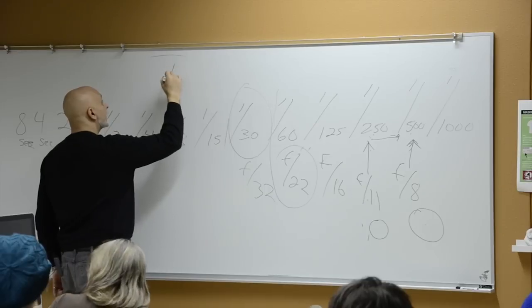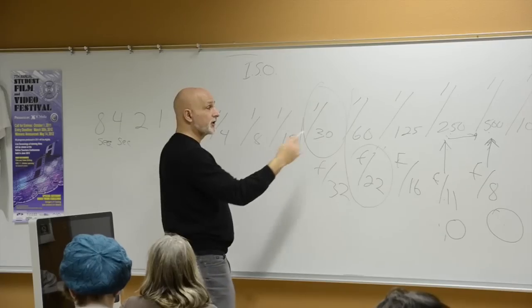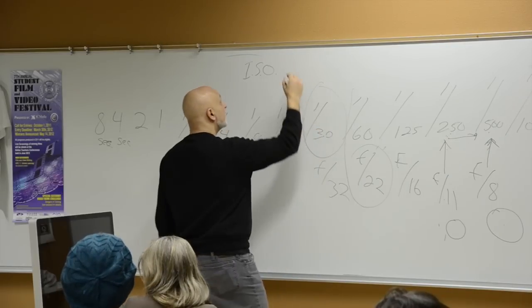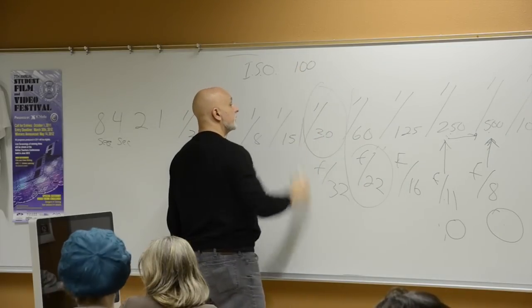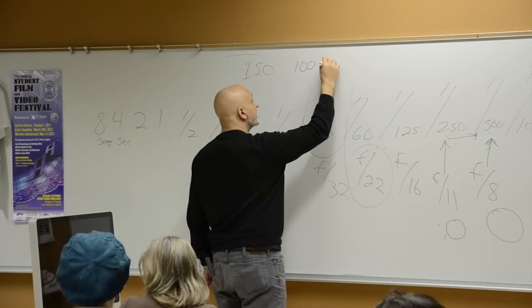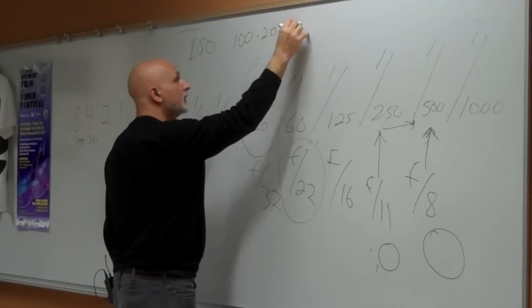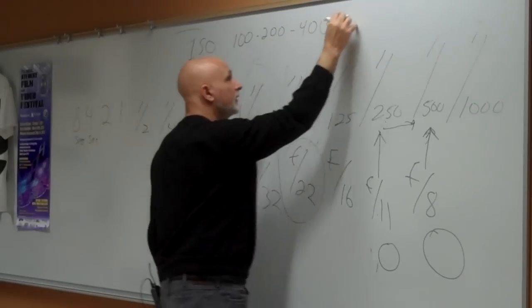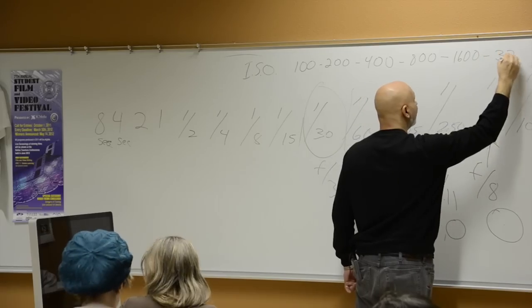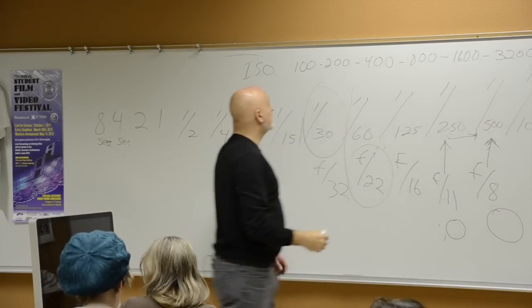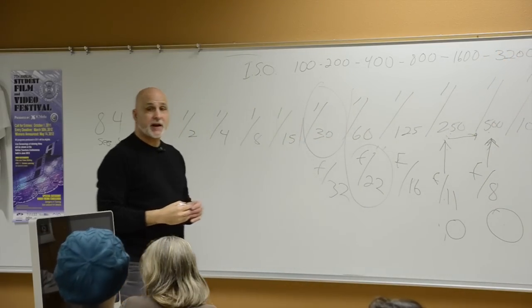So here's your ISOs. ISOs are just as simple as shutter speeds. It's just like shutter speeds. They usually start at 100 and then they just keep doing this, they just keep doubling. I could keep going. Usually though, those are the ones that you're going to get on your cameras.